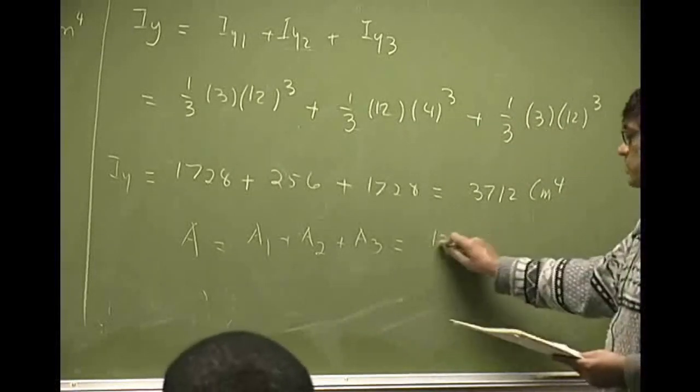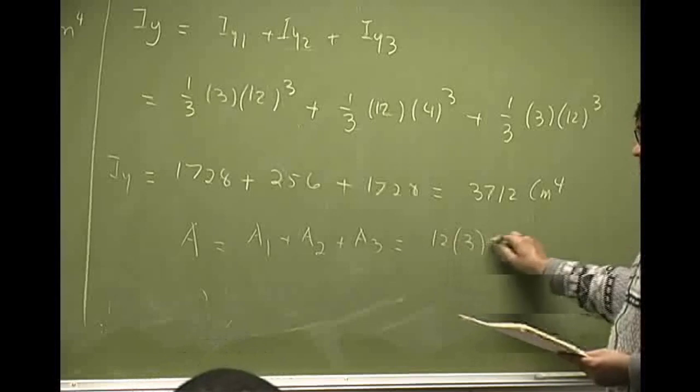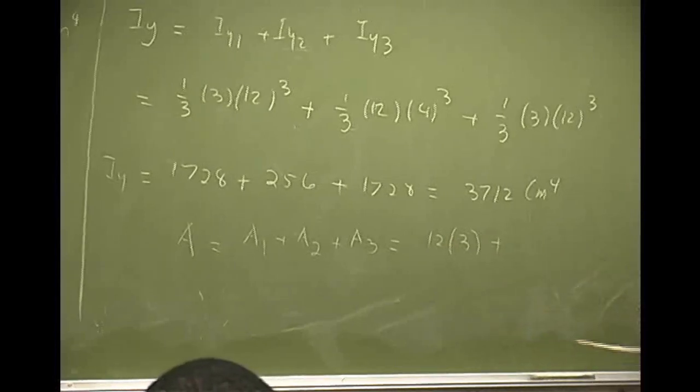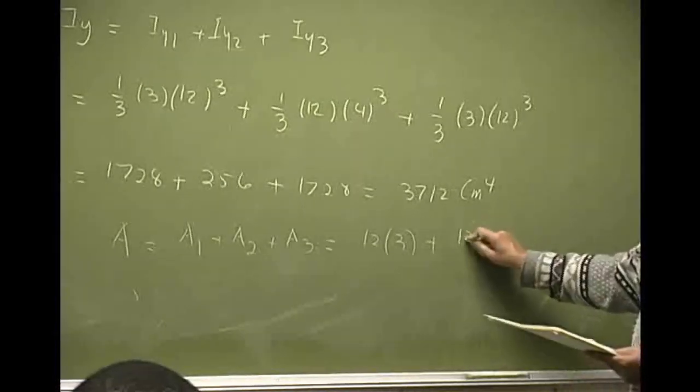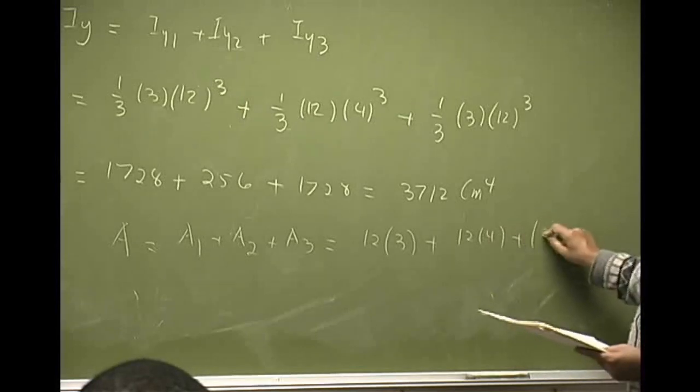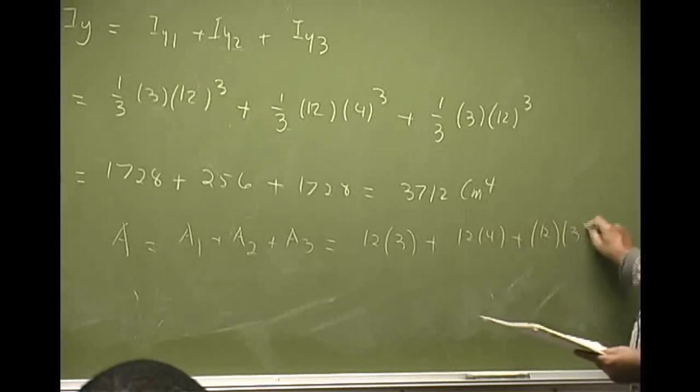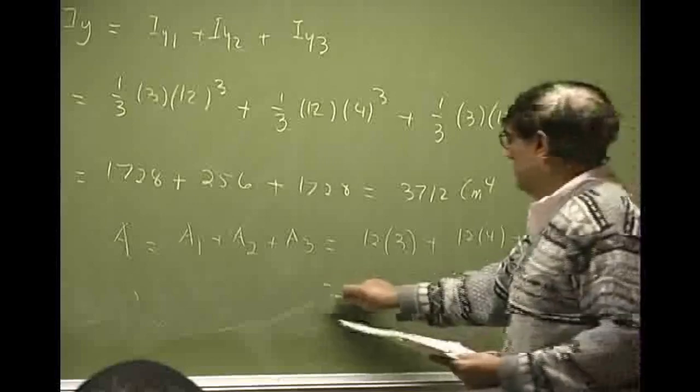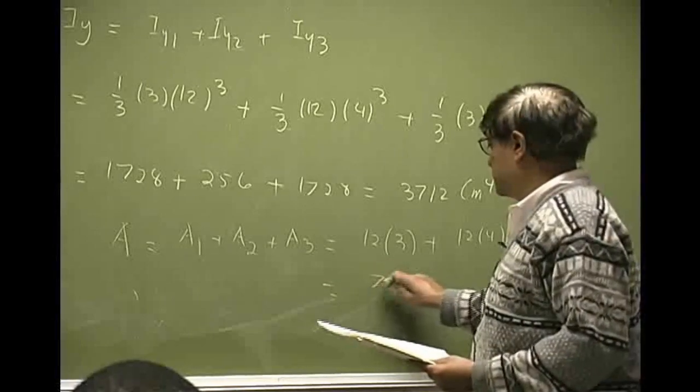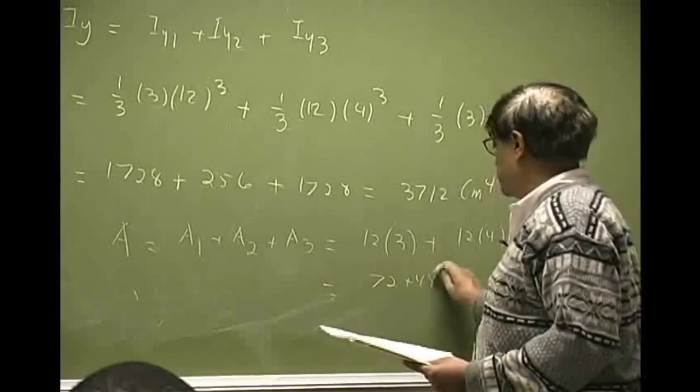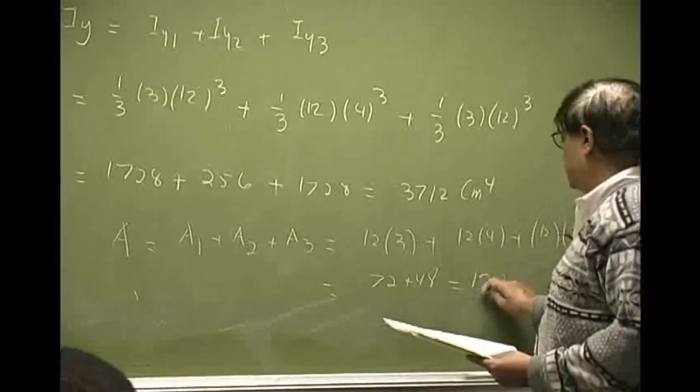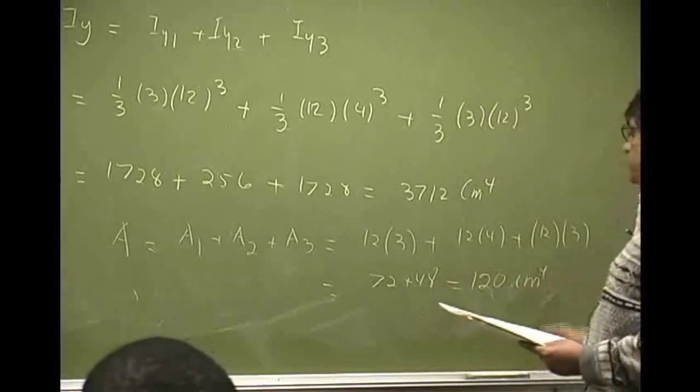A1 is 12 times 3, A2 will be another 12 times 4, then you have 12 times 3. So that's 36, 36, 72, 48, and 120 centimeters to the power fourth.